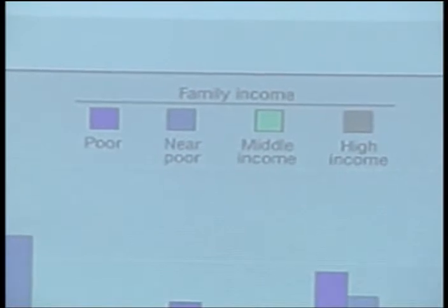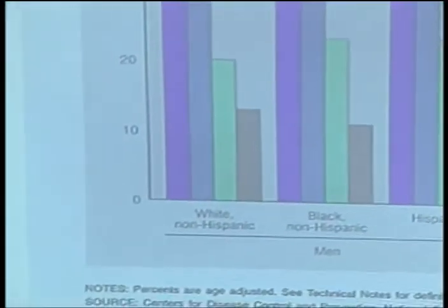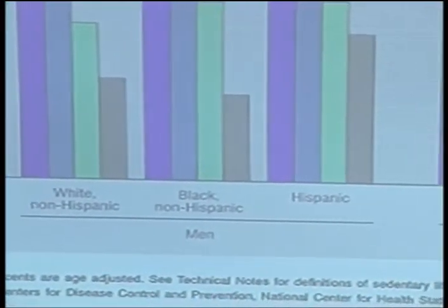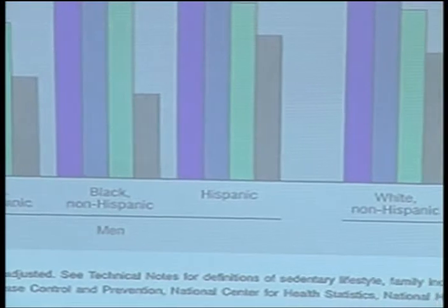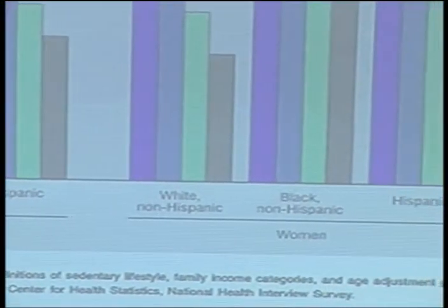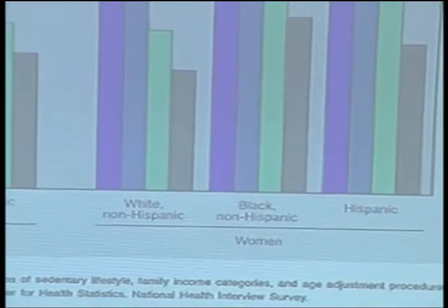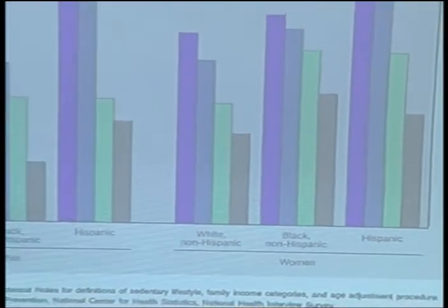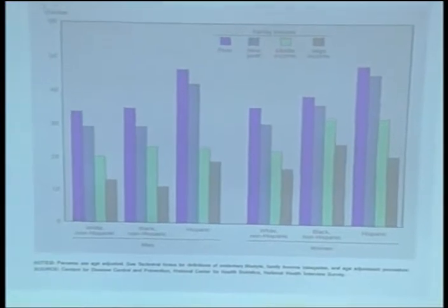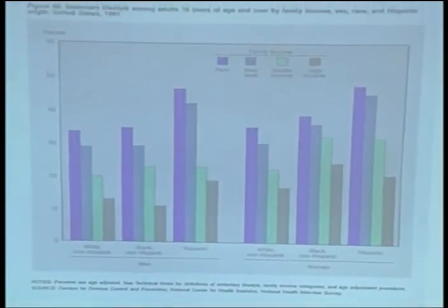What we see here is not uncommon to what we saw before. Females have higher rates than males. We see a social gradient, and that gradient exists for gender as well as by race. Racial and ethnic minorities have higher rates of sedentary lifestyle compared to non-minorities.